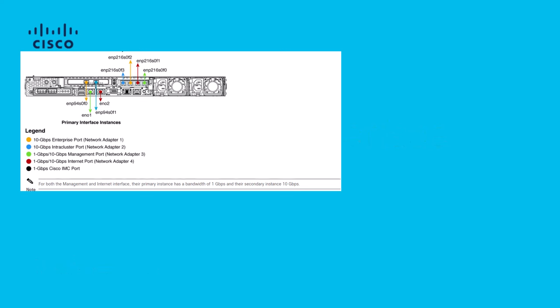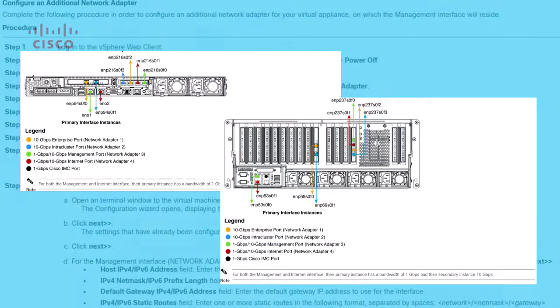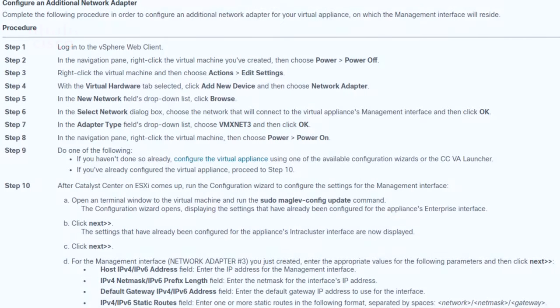The physical appliances provide four routed interfaces, each with one primary and one secondary physical network adapter. The physical location of these network adapters varies by appliance model; however, the logical configuration will be the same. The virtual appliance OVA creates only one virtual network adapter, but a second can be added if needed.